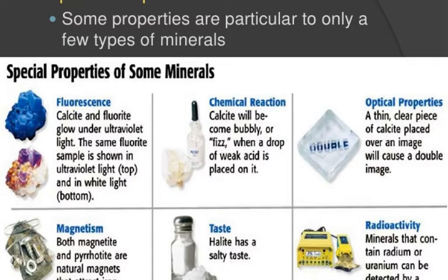Some minerals have properties particular to only one or a few types. Some might have fluorescence - for example, calcite and fluorite will glow under an ultraviolet light, appearing blue or white with some purple. Some will have chemical reactions: if you drop a weak acid on calcite, it will bubble or fizz. Calcite also has special optical properties - a thin clear piece placed over an image will cause a double image. Some are magnetic, like magnetite and pyrite, which are natural magnets. Calcite has taste as a special property, but don't taste something unless you know what it is. Some minerals will be radioactive, like radium and uranium, and a Geiger counter will detect them.